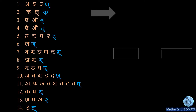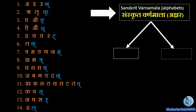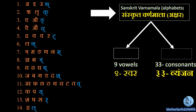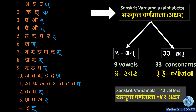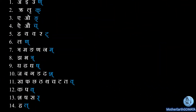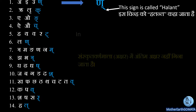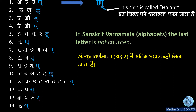From these 14 Maheshwar Sutras we get Sanskrit Varna Mala. In Sanskrit Varna Mala there are nine vowels and 33 consonants. In Sanskrit, vowels are known as 'Ach' and consonants are known as 'Hal'. So there are nine Ach and 33 Hal. Nine Ach plus 33 Hal equals 42 letters, so in Sanskrit Varna Mala there are 42 letters. In these 14 Maheshwar Sutras, every last letter has an oblique line — this sign is called 'Halanta' in Sanskrit.